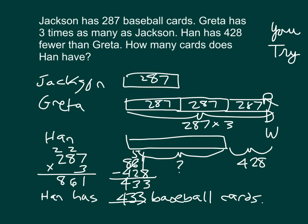So Han has 433 baseball cards. Remember, it's very important to express your answer clearly. Let's think whether that's a reasonable answer — 433. If Han has 433, is that still fewer than Greta's? It is fewer than Greta's. And we had that relationship that Greta had 3 times as many as Jackson. In each of these problems we worked on today, we had multiple steps within the problem, and there are different approaches one could take when solving.